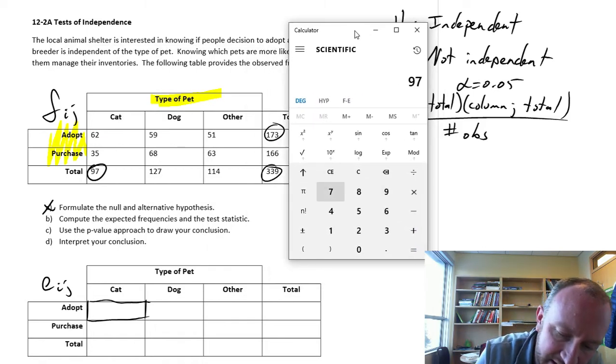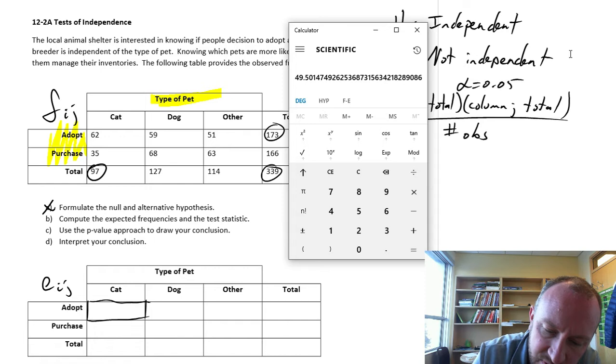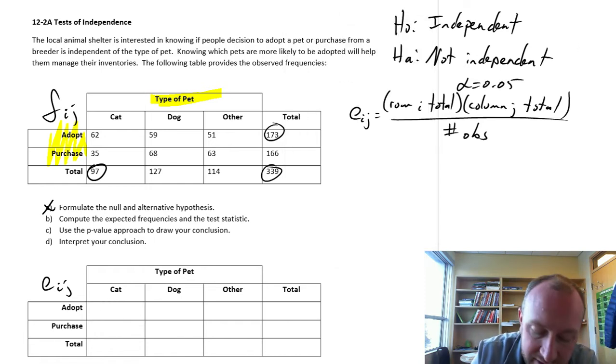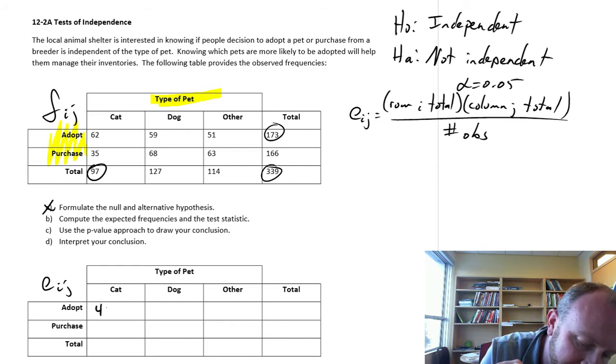For the cat, this is going to be 97 times 173 divided by 339. So 49.5. So if the null hypothesis is true, this is going to be 49.5.